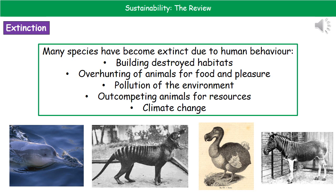If we consider extinction, what we find is that humans have been responsible for the extinction of a disturbing number of species. The reasons they've become extinct include destroying their habitats when we've built buildings, overhunting them for food or even for pleasure, polluting their environment so they can no longer survive there, out-competing those animals for resources like food, and being key instigators in climate change.